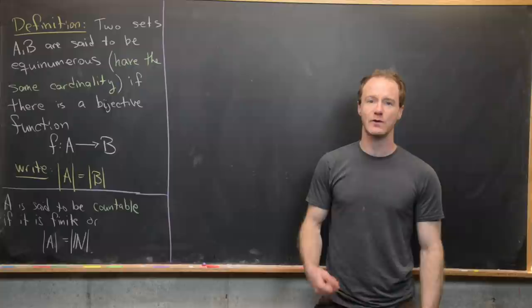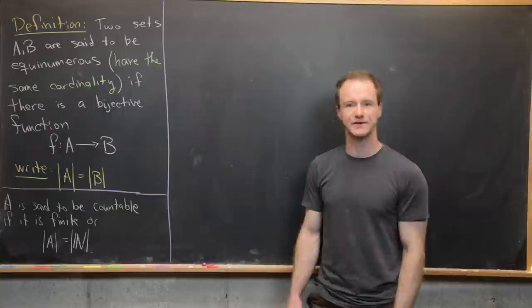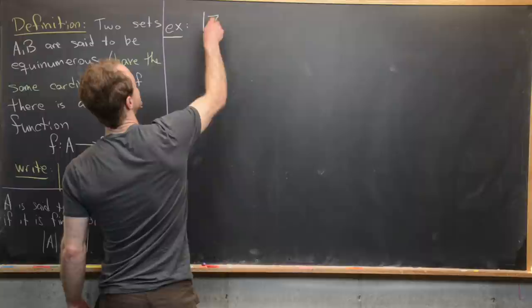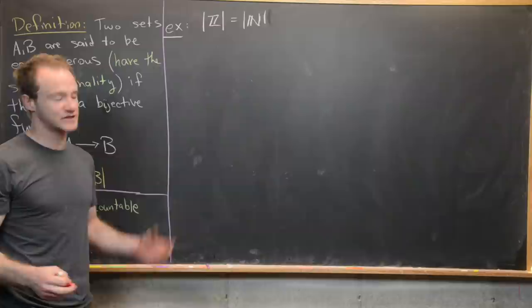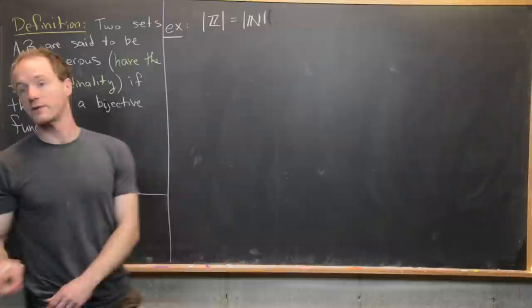For the rest of the video, I want to provide a bunch of examples. So example number one will be that the integers are equinumerous with the natural numbers — in other words, the set of integers is countable. Let's sketch up a picture for how we think this should go, and then we can make a formula for the function that will construct this bijection.